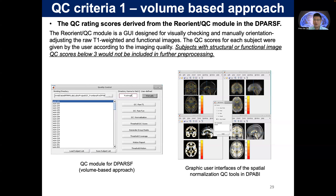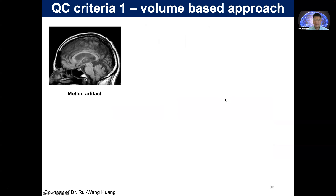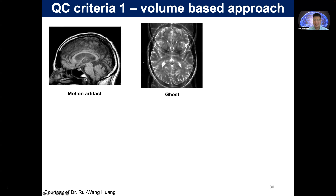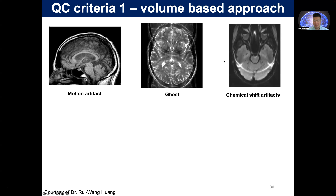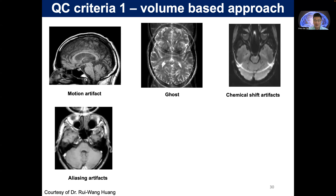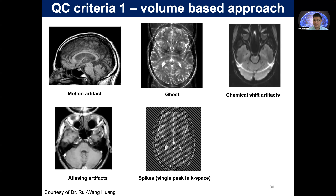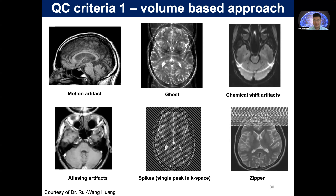During this quality control step, you can easily explore or track if your data have motion artifacts — you can see rings of motion artifacts in the T1 data, ghosts, chemical shift artifacts, aliasing artifacts, and spikes (a single peak in K-space), or zipper artifacts. I would like to thank Dr. Rui Wang Huang for providing these examples. If you can see this kind of bad quality, you definitely need to exclude them from your further analysis.